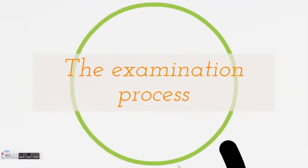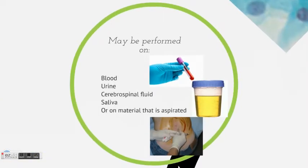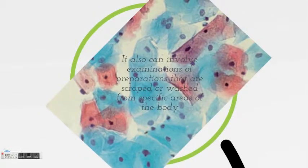How does the examination process take place? The examination process may be performed on blood, urine, cerebral spinal fluid, saliva, or on material that is aspirated. It also can involve examination of preparations that are scraped or washed from specific areas of the body.